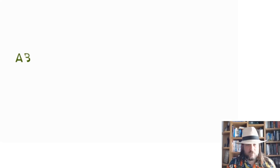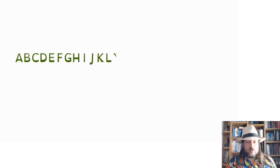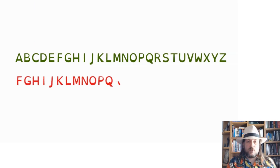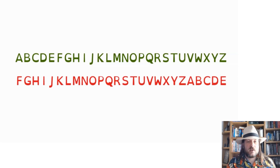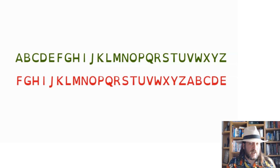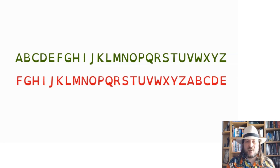Caesar's substitution cipher worked like this: firstly you need to write out the alphabet twice. The first time you write it out normally, and the second time you start at a different letter and write it all the way through again. When you get to Z on the second alphabet you start again at A until the two alphabets line up. You can start the second alphabet at any letter except A, because that wouldn't make a very good cipher.